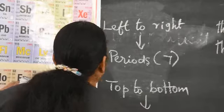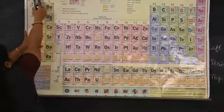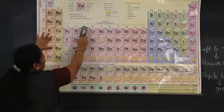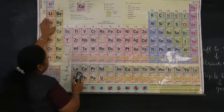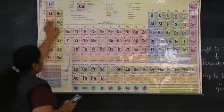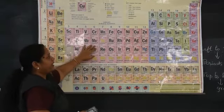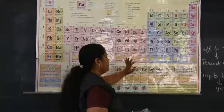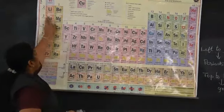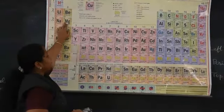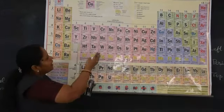Among the 18 groups, groups 1 and 2 are called S block elements. Groups 3 to 12 are called D block elements. Groups 13 to 18 are called P block elements. The 6th and 7th rows contain the F block elements.